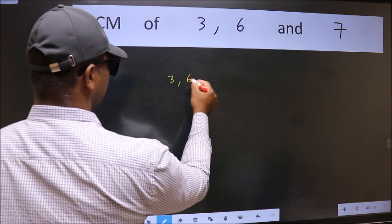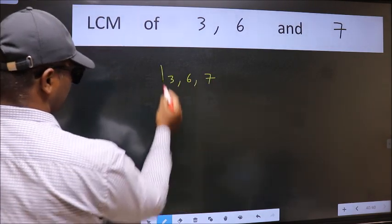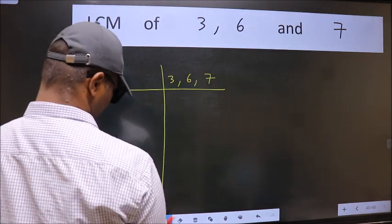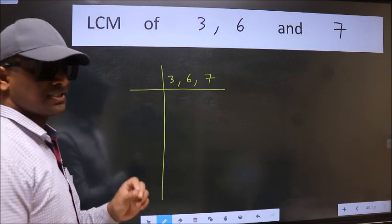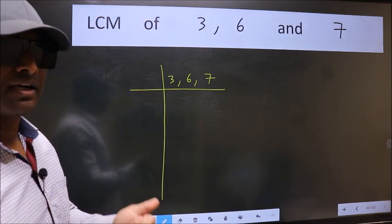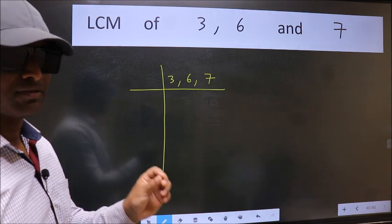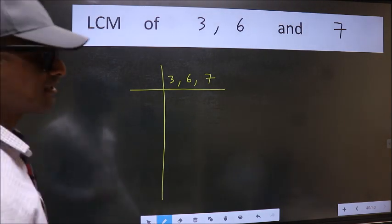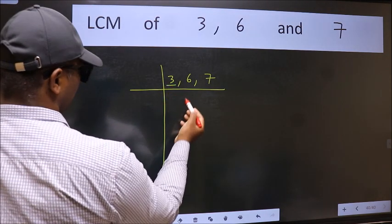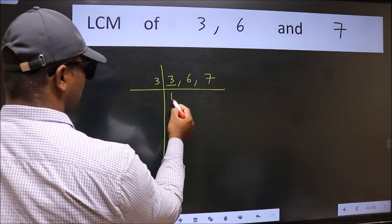3, 6, 7. This is your step 1. Now we should focus on the first number which is 3 here. 3 is a prime number. So 3 divides 3.